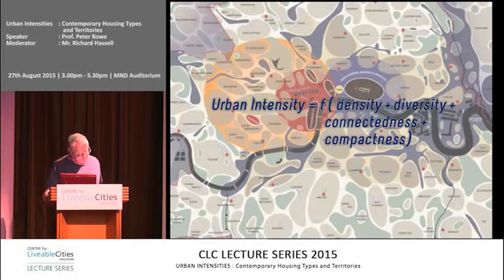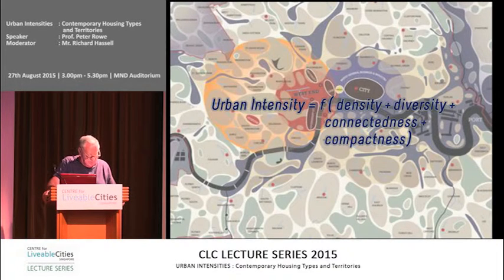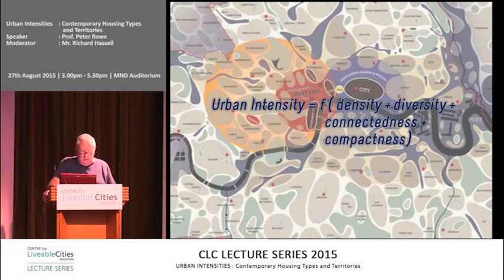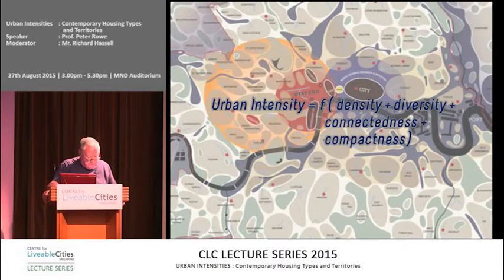In these regards, it's a useful way of thinking about cities by way of their broad constituent characteristics, somewhat analogous to Abercrombie's London Mars plan, which I'm showing you as an underlay here. Here I'll be speaking about a broad concept of urban intensity, defined with a sort of rough equation, by density, diversity, degrees of connectedness, and a certain amount of compactness.